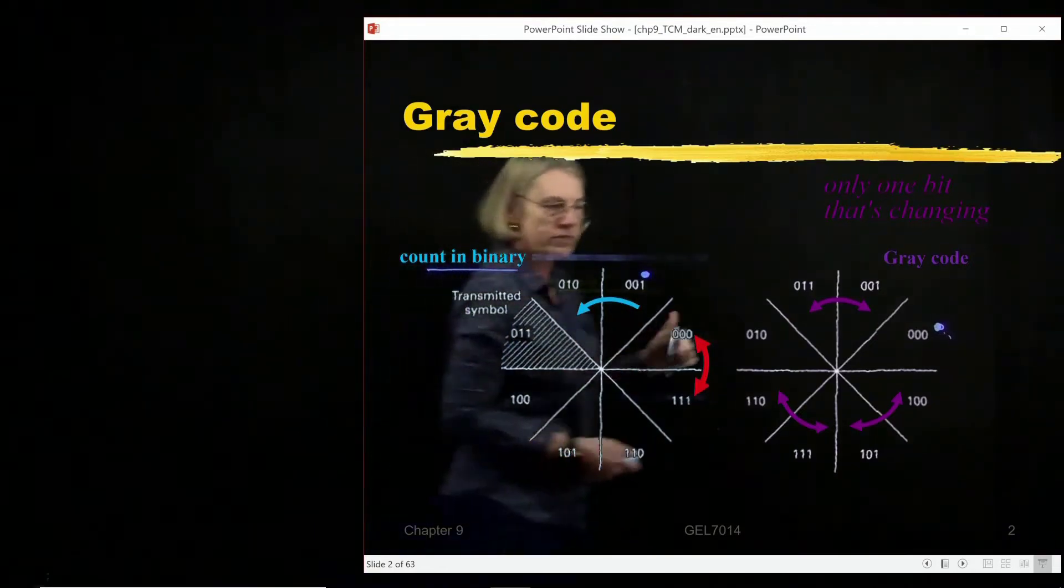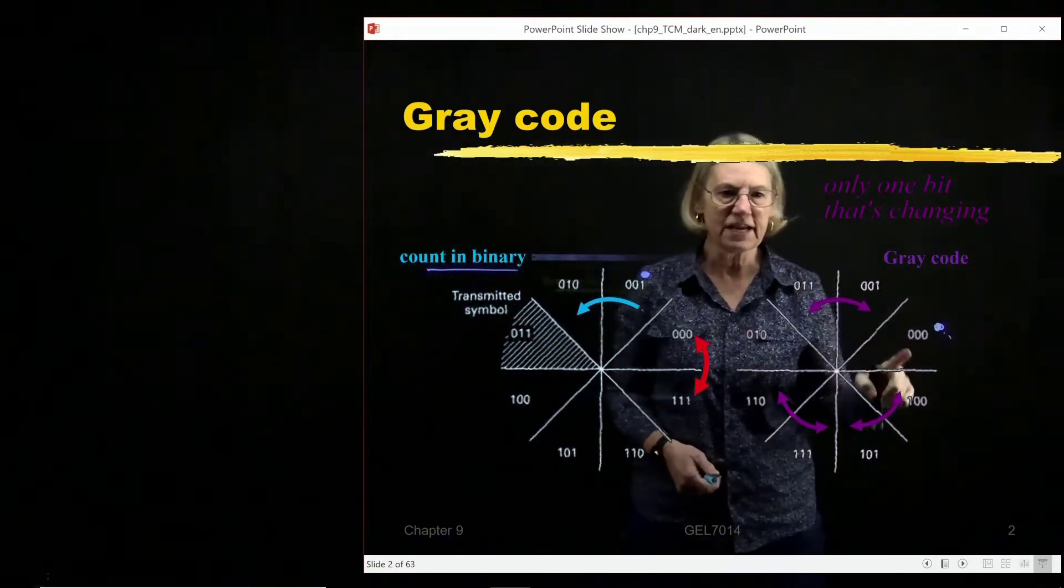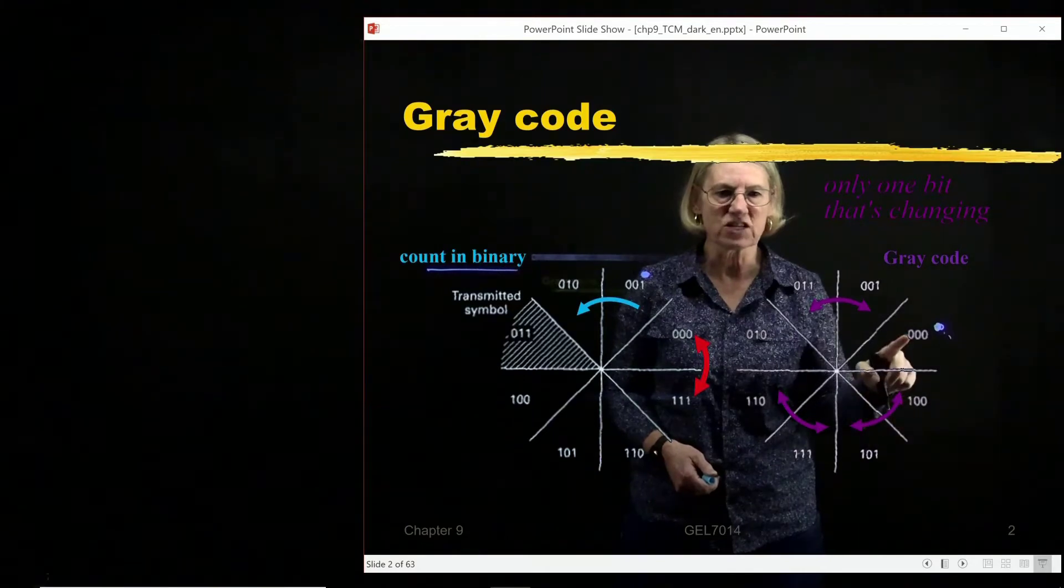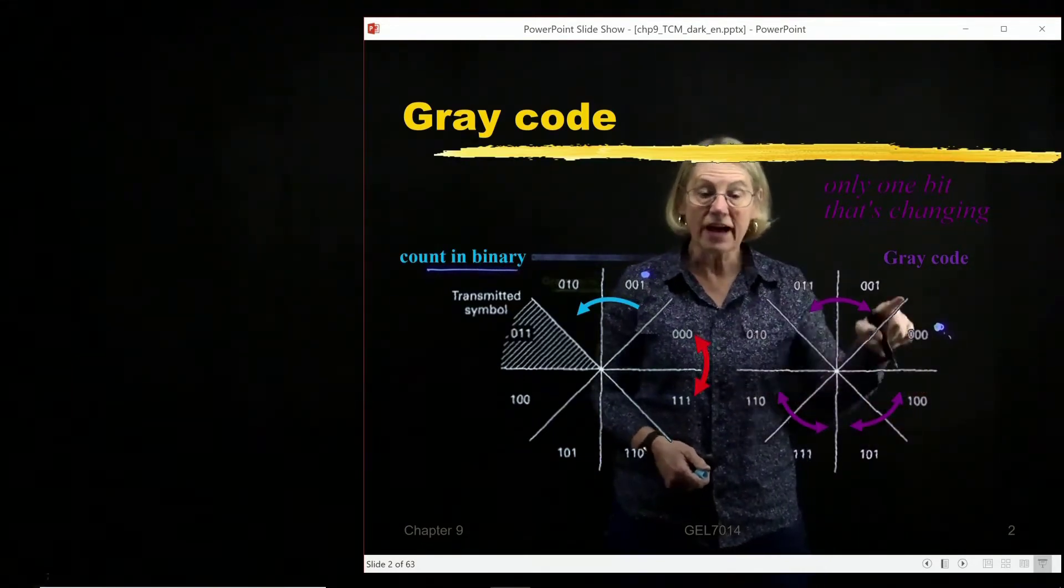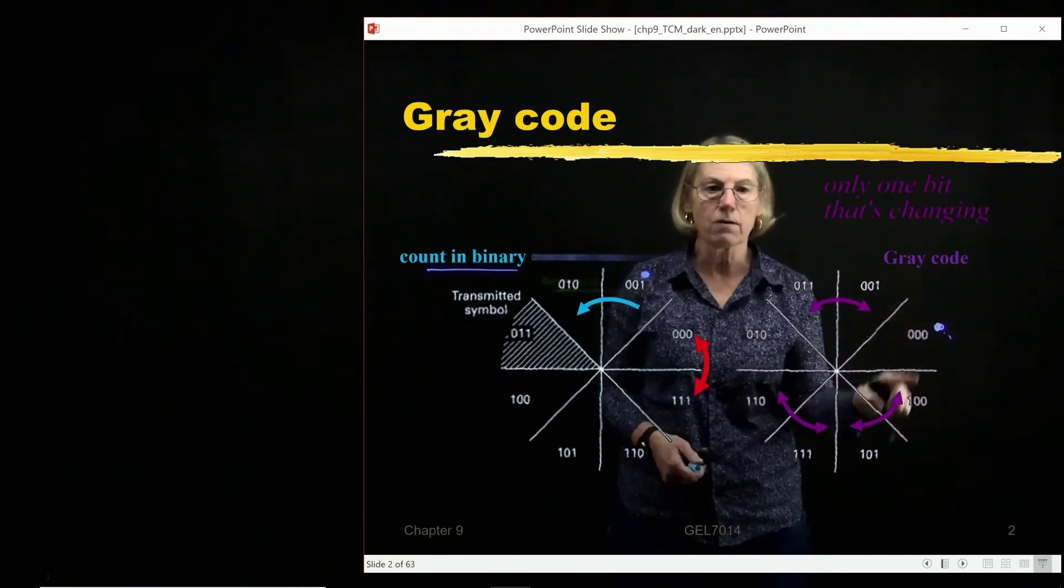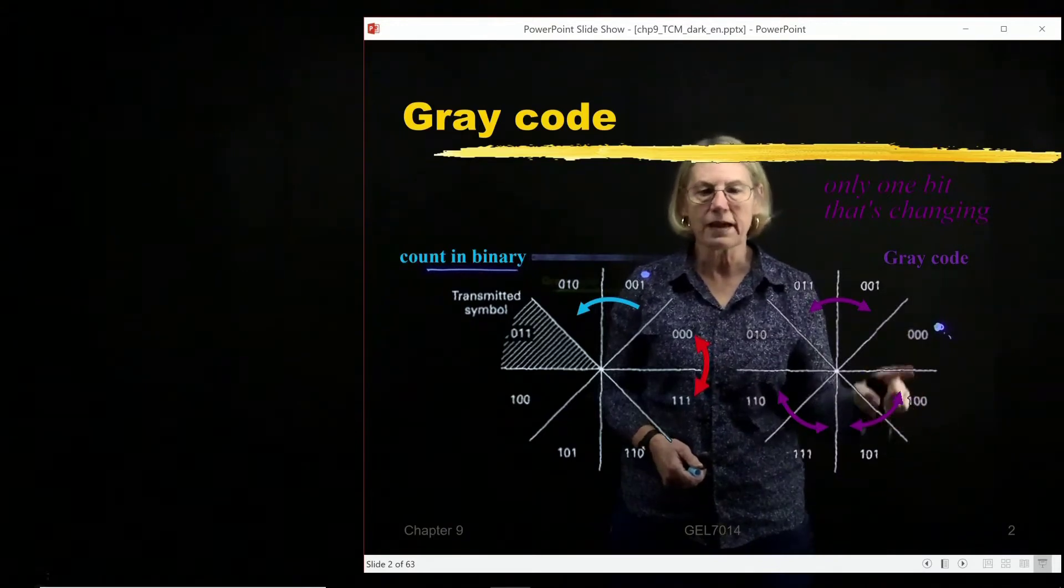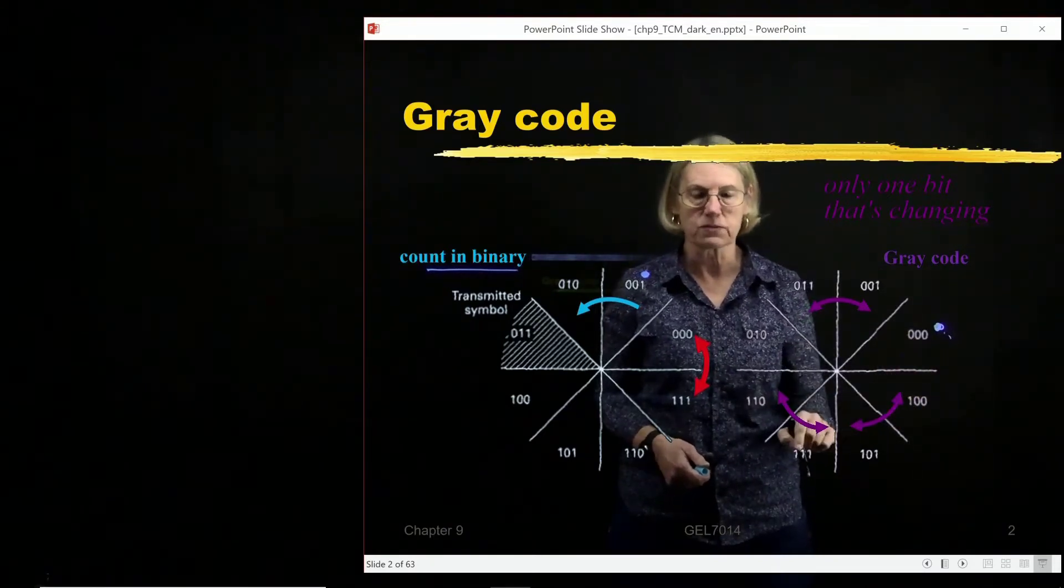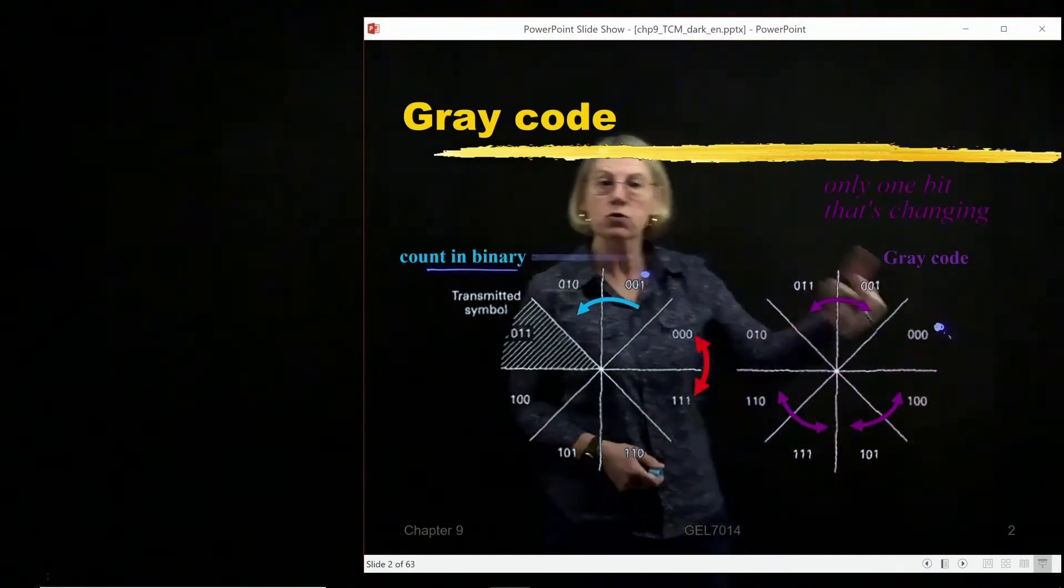So that's what we want which is why from here to here it's just the very first bit that changes but the second and third bits do not change. So if we do make an error between these two symbols we'll only make an error on the first bit but the last two bits will have no error in it. So that was gray coding.